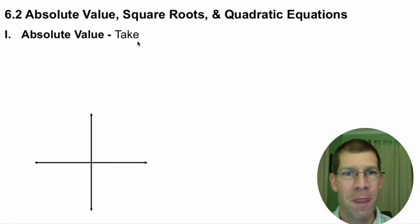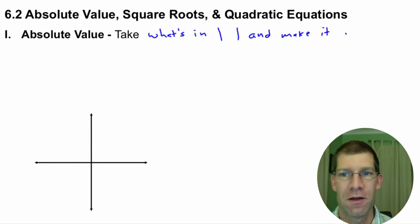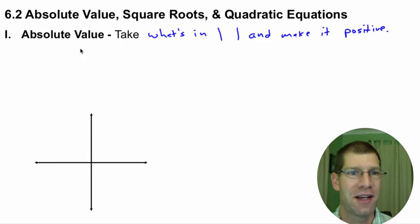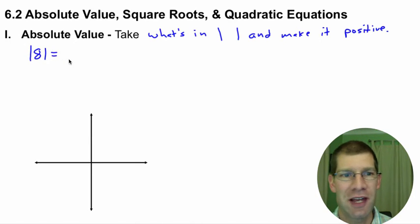But I want to start out by talking about absolute value, and then we'll get into how that relates to square roots and the quadratics. So my Roman numeral 1 is absolute value. You could skip this first part, it's really something you've been doing for years. But the whole point in absolute value is you take what's in the absolute value and make it positive.